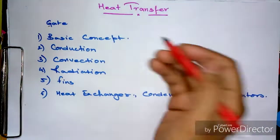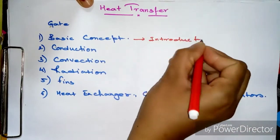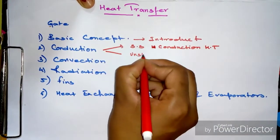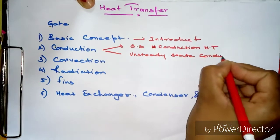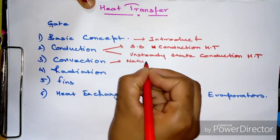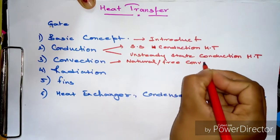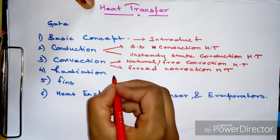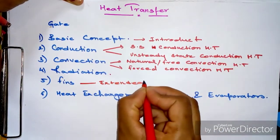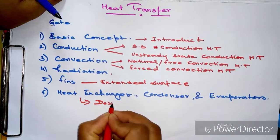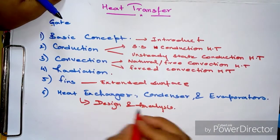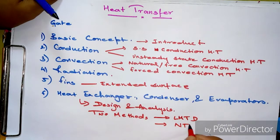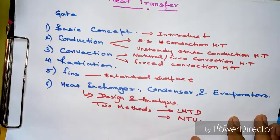The basic concept contains an introduction to the subject. Second is conduction, which has two types: steady state and unsteady state heat transfer. Third is convection, also of two types: free or natural convection and forced convection. Fourth is radiation, fifth is fins — an extended surface phenomenon, part of conduction. Sixth is heat exchangers, condensers, and evaporators, where we study analysis, design, and the methods used: LMTD (logarithmic mean temperature distribution method) and NTU (number of transfer units).